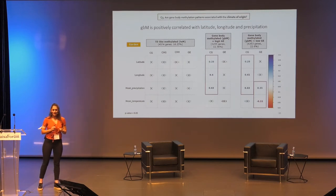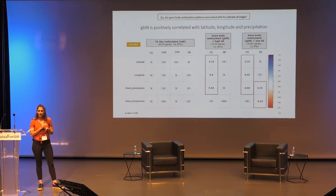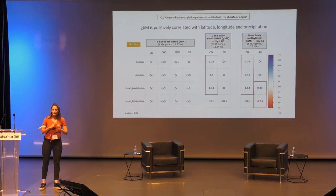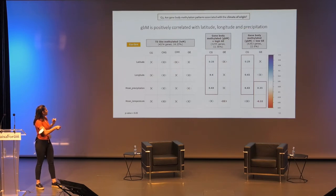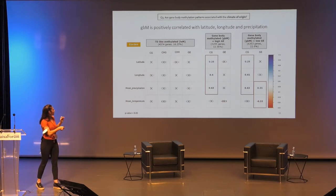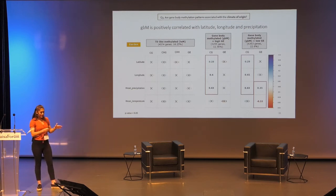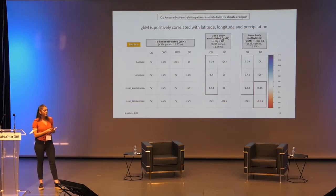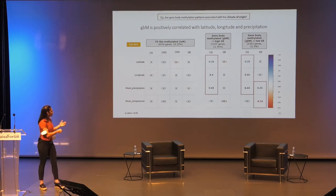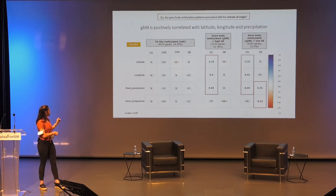Here we answer the last question of whether these patterns are associated with the climate of origin of the plants. The X marks in the table indicate statistically non-significant correlations between climatic variables of origin and methylation or gene expression of the different gene clusters. We found a positive correlation only for gene body methylation — specifically CG methylation found across gene bodies — which is associated with latitude, longitude, and precipitation of origin of the plants. We also found a correlation between gene expression of the low-expressed gene body methylated genes and the precipitation and temperature of origin.